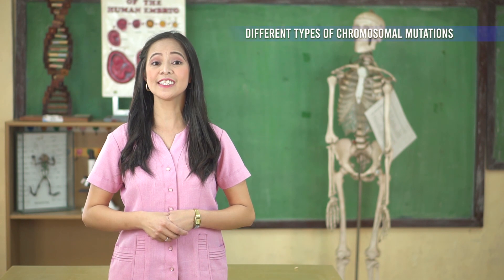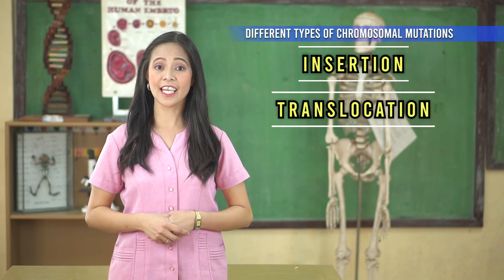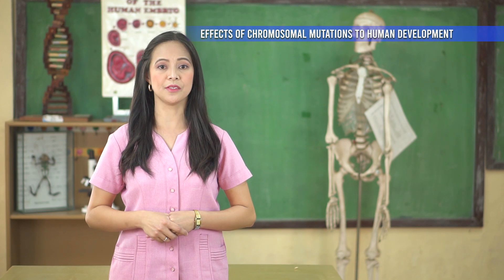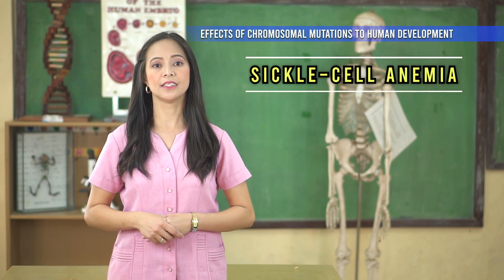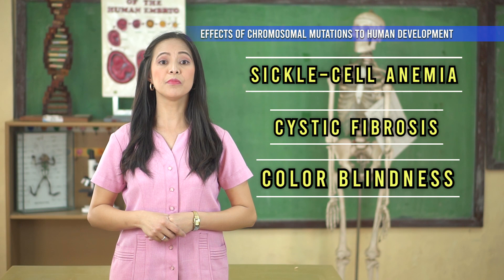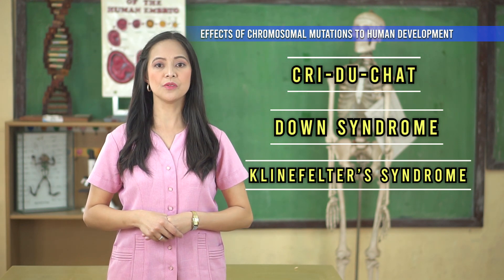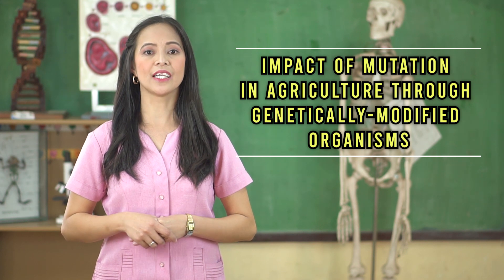In this episode of Agham Alam Hub, we described the different types of chromosomal mutations — these include insertion, translocation, deletion, duplication, and inversion. We also related some effects of chromosomal mutations to human development. Examples of these genetic disorders are sickle cell anemia, cystic fibrosis, color blindness, hemophilia, Cri du chat, Down syndrome, Klinefelter syndrome, and Turner syndrome. Lastly, we recognized the impact of mutation in agriculture through genetically modified organisms.